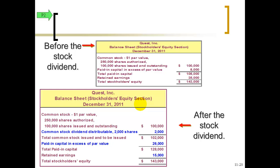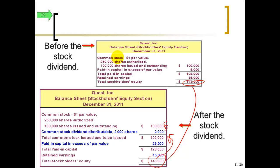Here's the balance sheet before and after the small stock dividend. Eventually the $2,000 distributable will move into the common stock account when shareholders actually receive their shares. The total equity is the same before and after — all we did is shift money from retained earnings up into the paid-in capital section. The company is still the same size, but now we have 102,000 shares representing ownership versus just 100,000 shares before — satisfying shareholders psychologically without changing the company's actual size.